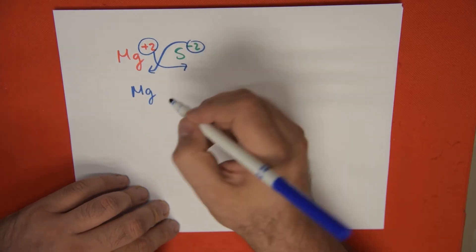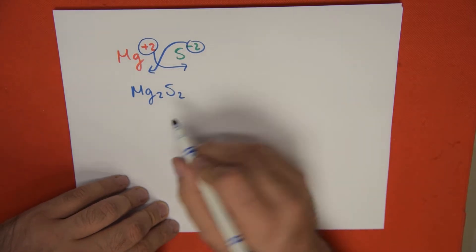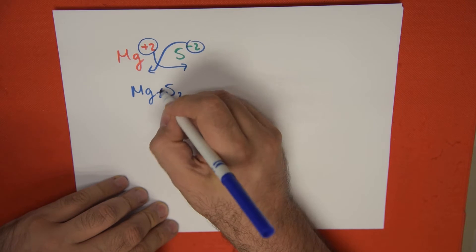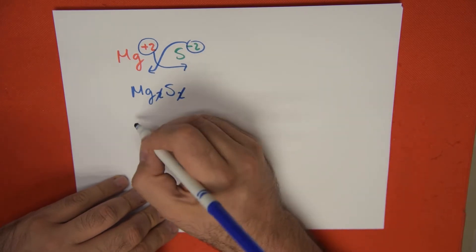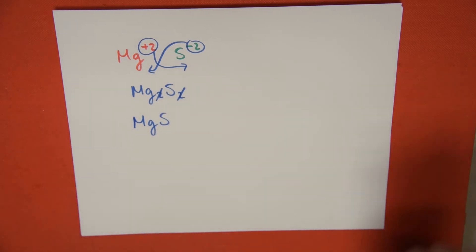So then we would need two magnesium atoms, and we would need two sulfur atoms. So in this case, since we have a double-2, we're going to reduce this. And since we don't write number one as a subscript, we're only going to write MgS as our final formula, creating magnesium sulfide.